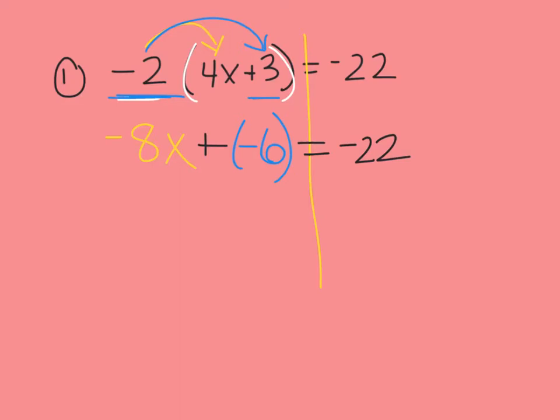Now I need to get rid of that negative 6 so we can isolate this variable and get our x all by itself. To get rid of negative 6, I need to add 6 to both sides. By adding it here, it leaves me with just negative 8x on the left. But if I did it on the left, I've got to make sure I'm doing it on the right. Be careful with your integer rules here. Negative 22 plus 6 is negative 16. Remember, we're moving closer to zero there.